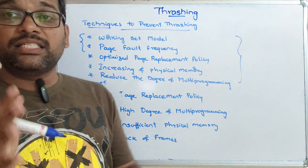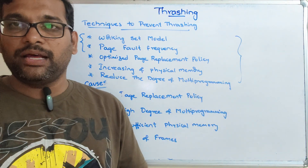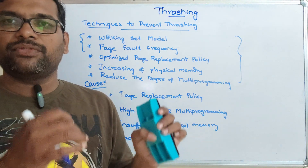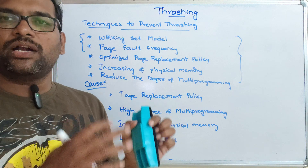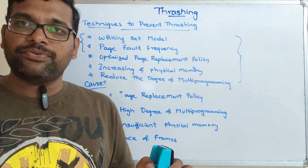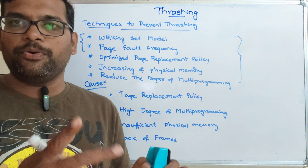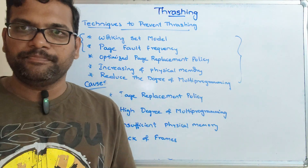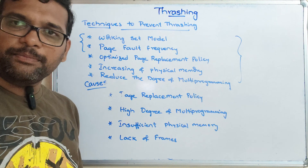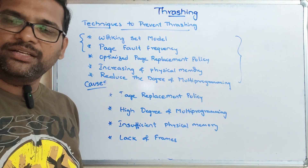To repeat the definition: thrashing is a situation when the CPU spends more time solving page faults rather than executing processes. A page fault means the required page is not available in main memory, so the OS loads it from secondary memory — that is swap in and swap out, also called paging. I'll stop here — if you enjoyed the session, like, share, and subscribe. Thanks for watching.